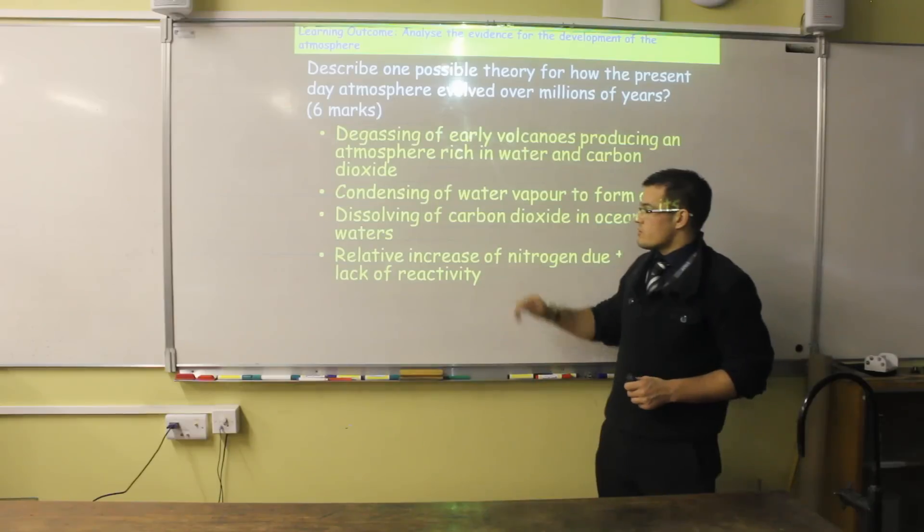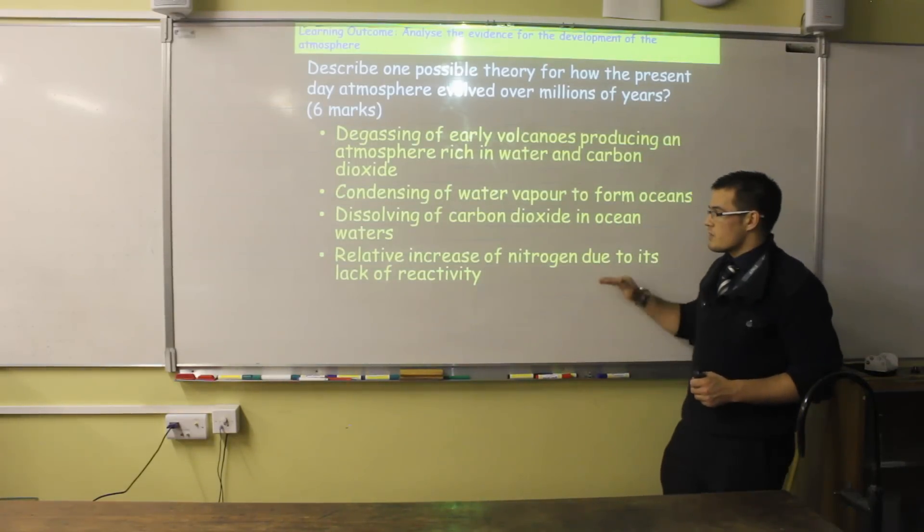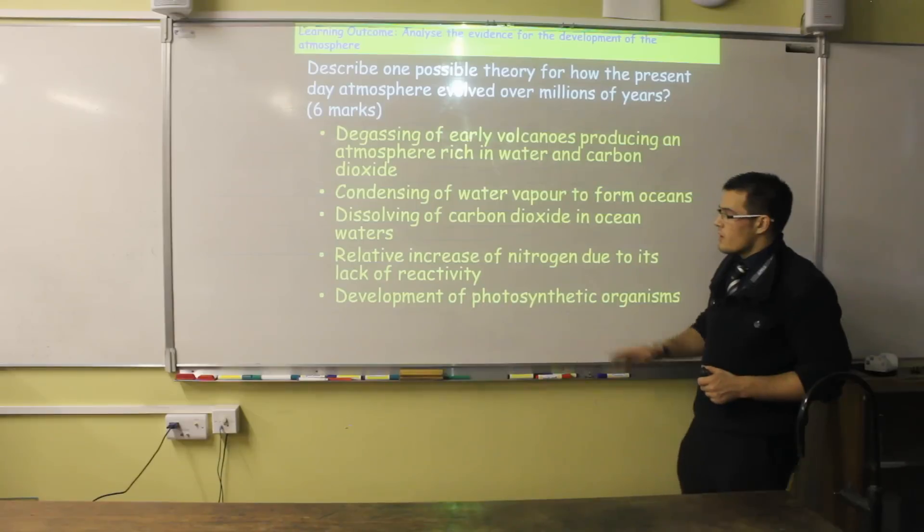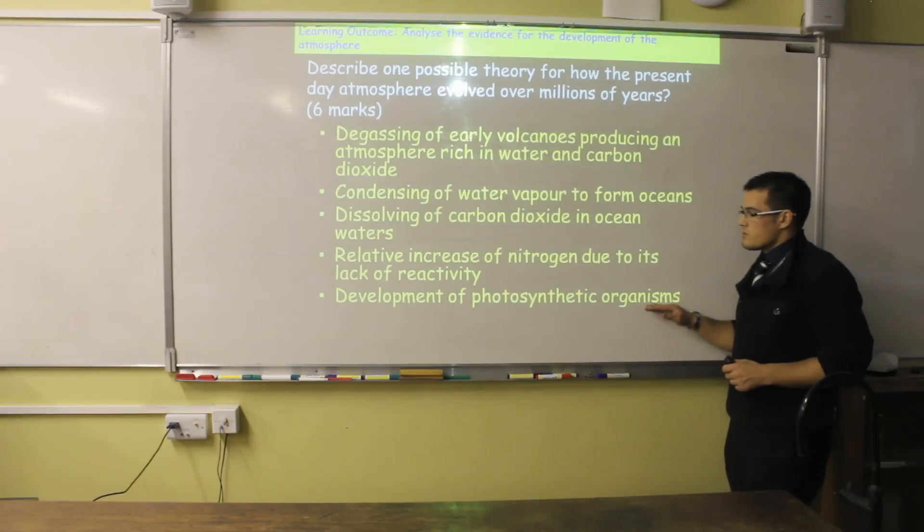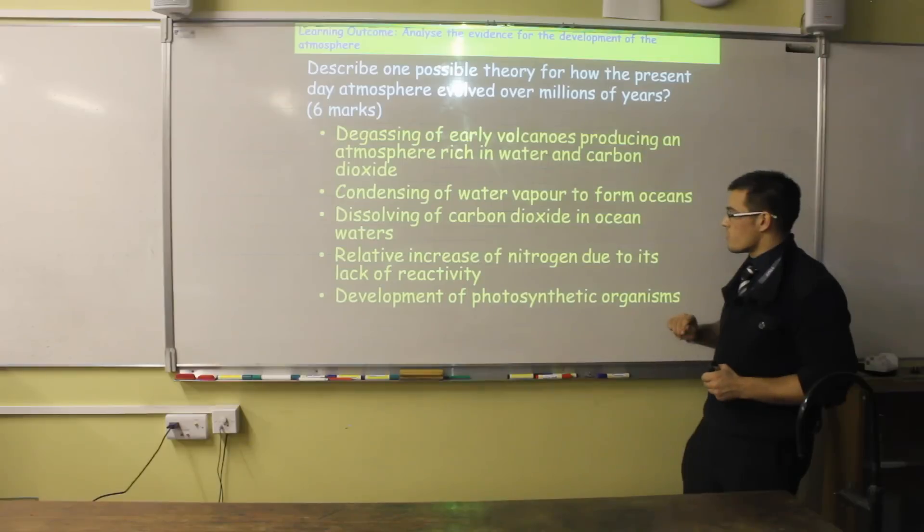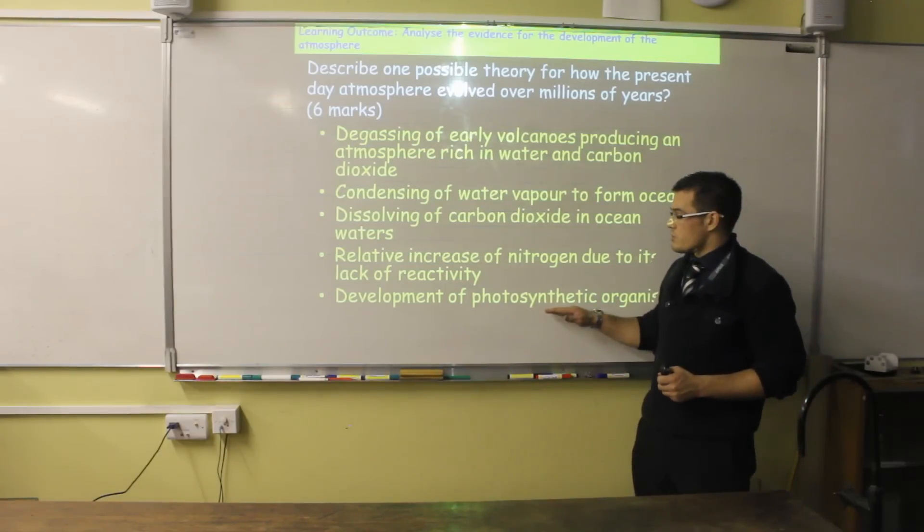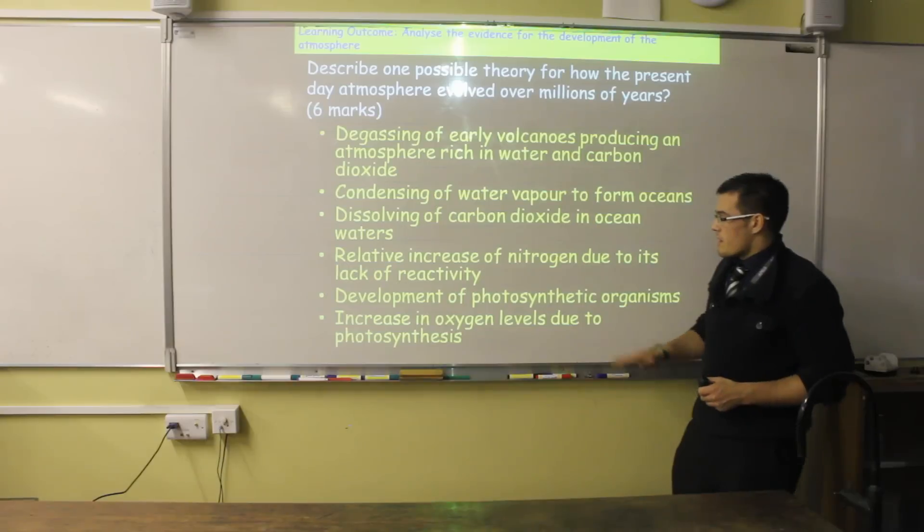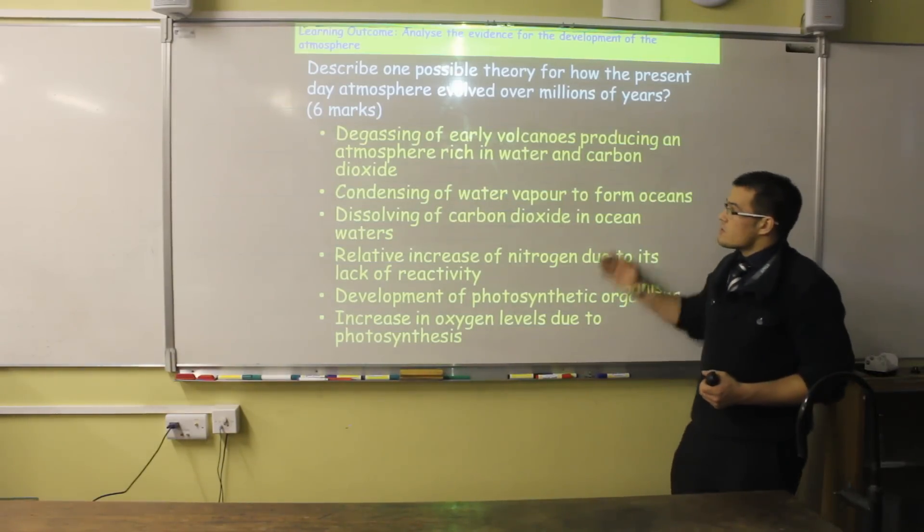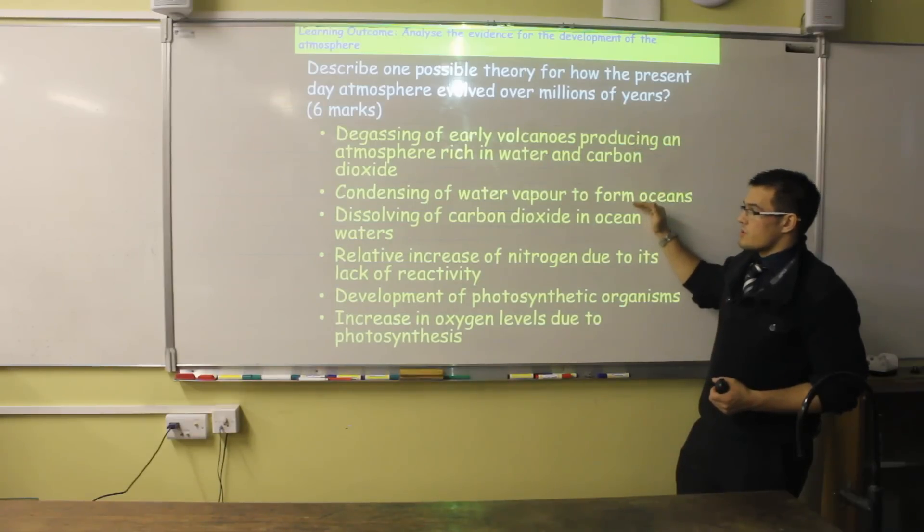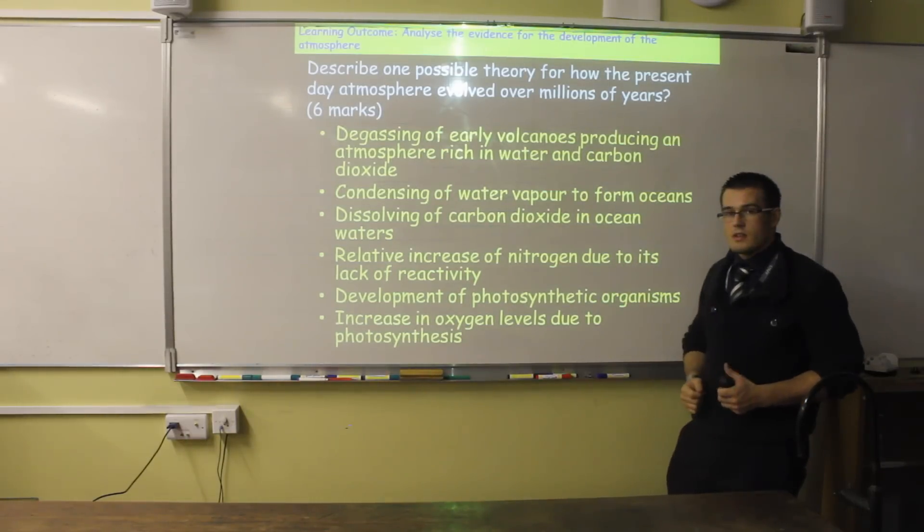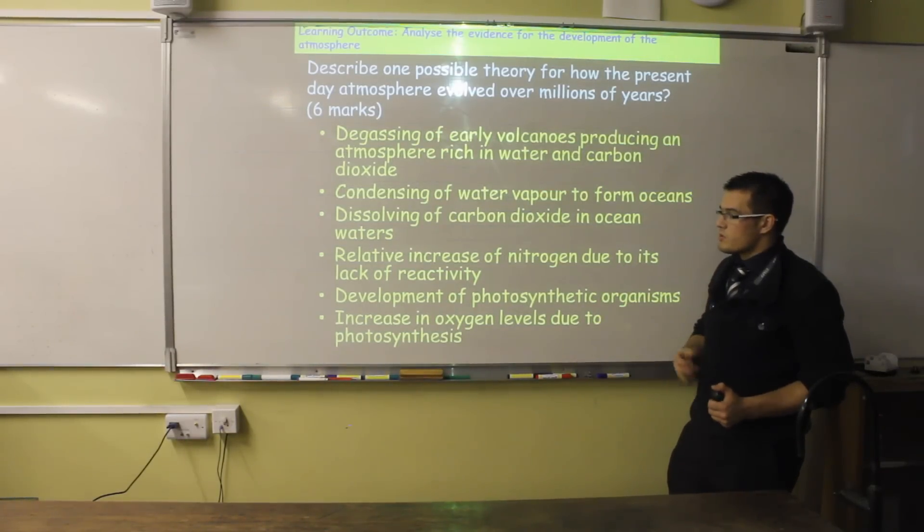And over time, nitrogen increased because of its lack of reactivity. This is because nitrogen molecules have a triple covalent bond, and therefore are very stable. Because we got oceans, we started to get the first forms of life. And when we started to get photosynthetic life, which is organisms that photosynthesise and produce oxygen, that meant oxygen levels started to increase, close to where they are to the present day. So this describes how carbon dioxide has decreased naturally, how oxygen levels have increased as of nitrogen. Nitrogen because of its inactivity, and oxygen because of photosynthesis.